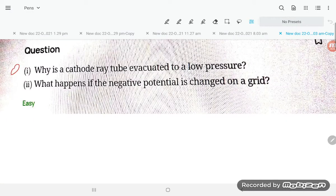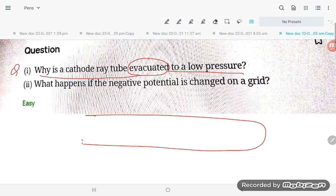Hello students, let us try to understand one problem. Why is the cathode ray tube evacuated to low pressure? In the discovery of the electron, this instrument is the cathode ray tube, also known as a discharge tube.